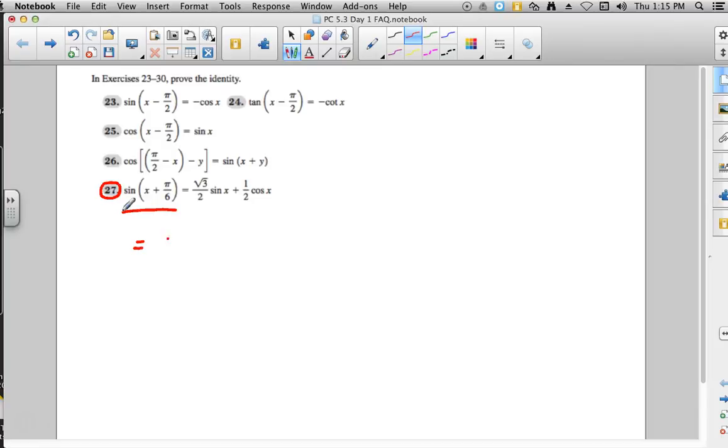The formula for sine has the pattern of sine, cosine, cosine, sine. And then whatever the sign is that's between the two angles that we want to add together, we're going to keep that sign. And that happens with sine, but not with cosine.